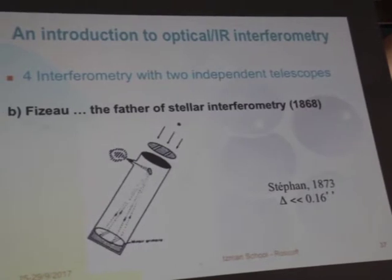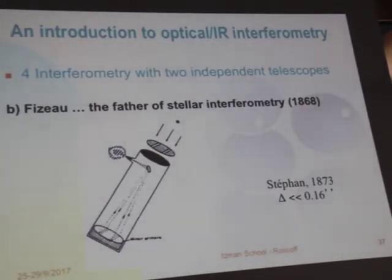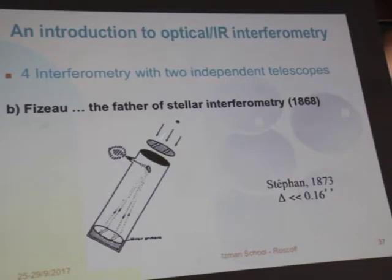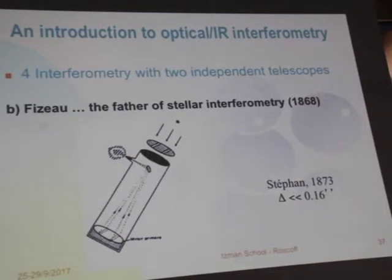Fizeau can be considered the father of stellar interferometry. It was Stéphane who tried, with the 80-centimeter Marseille telescope, to resolve stars. The mask consisted not of two holes but two slits for more light, but the fringes remain fringes. They looked at many bright stars but could not resolve any of them — they always saw a visibility close to one, meaning the angular diameter of the stars was smaller than 0.16 arcseconds, corresponding to a baseline of 65 centimeters at optical wavelengths.